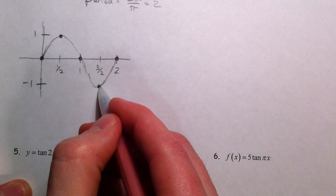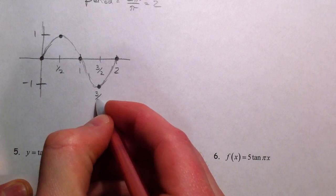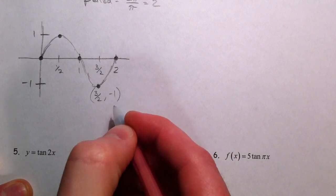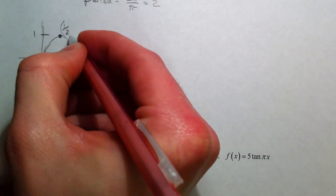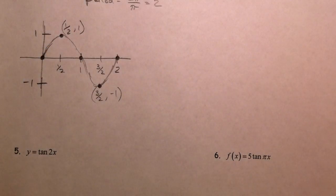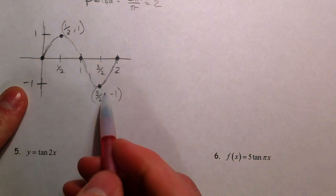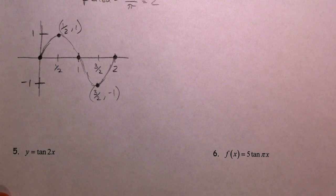And so we can see where it reaches its minimum. This is 3 halves, negative 1. This is 1 half, comma 1. You can see at what point in time it reaches its minimums, maximums, and we're good to go.